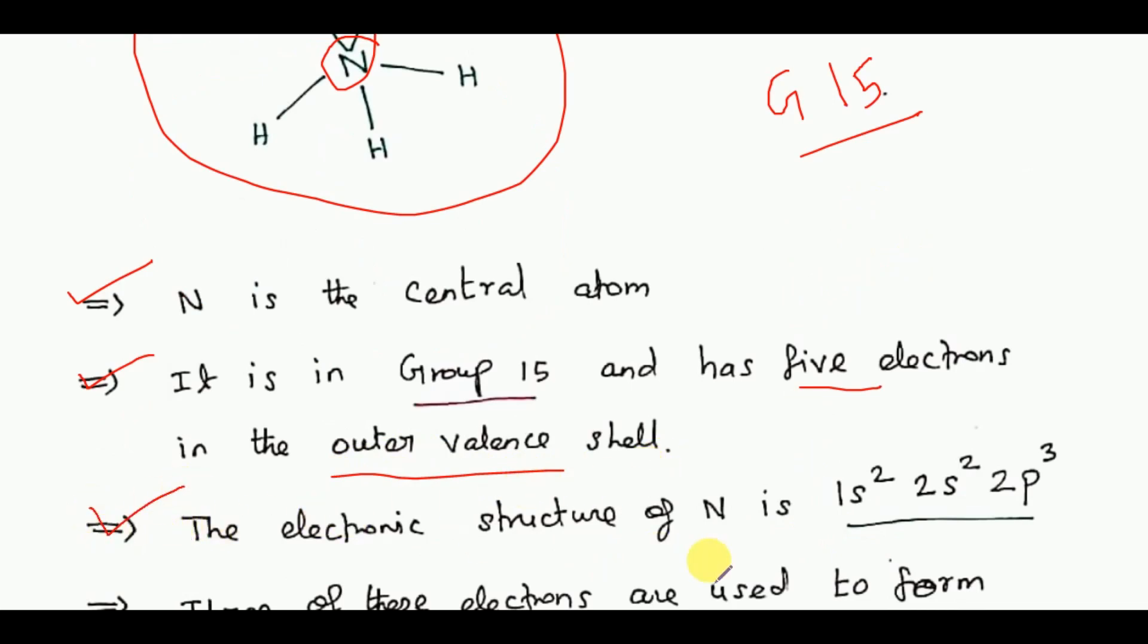The electronic structure of nitrogen is 1s2 2s2 2p3. 1s2 is a filled orbital. So there are five outer shell electrons.